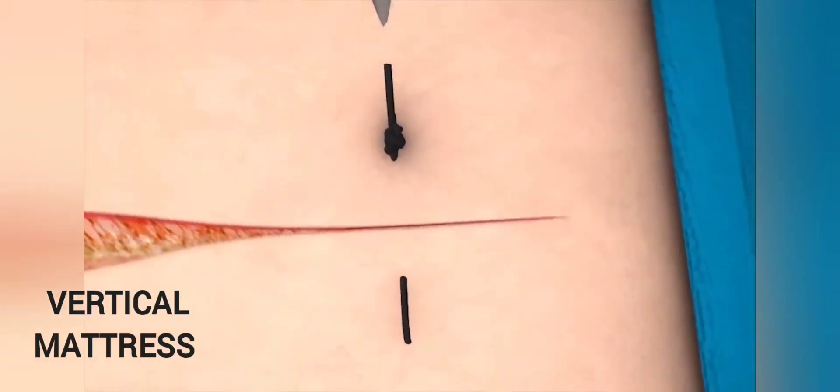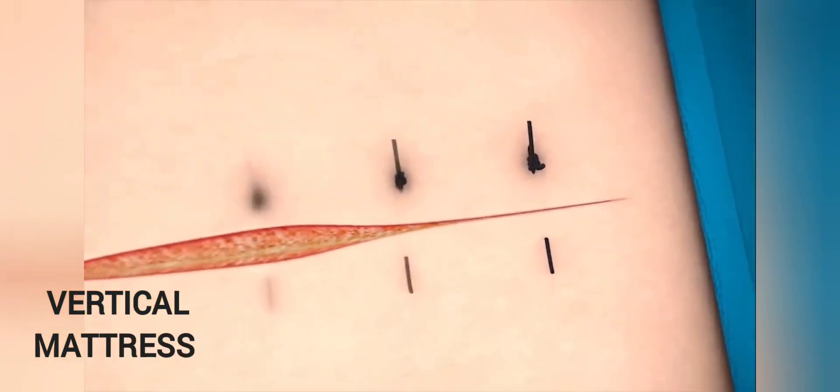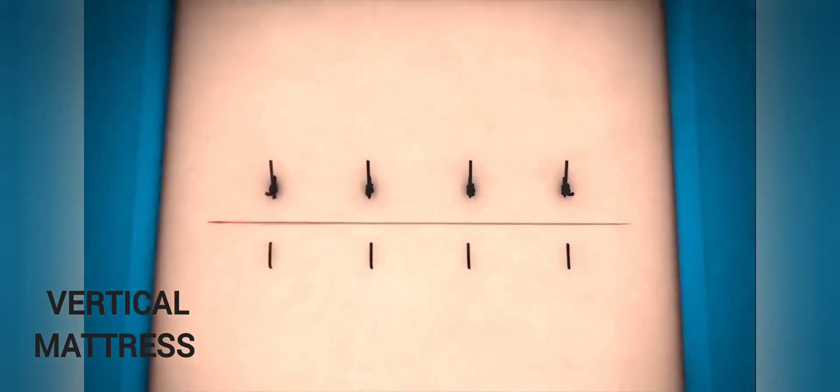Trim the ends and then continue with equally spaced vertical mattress sutures until the wound is closed.